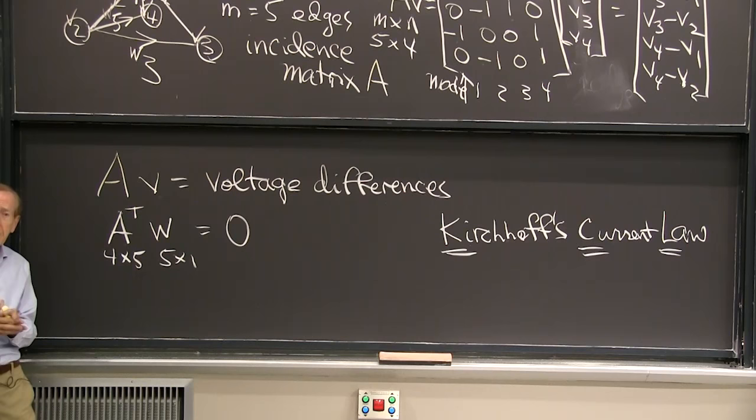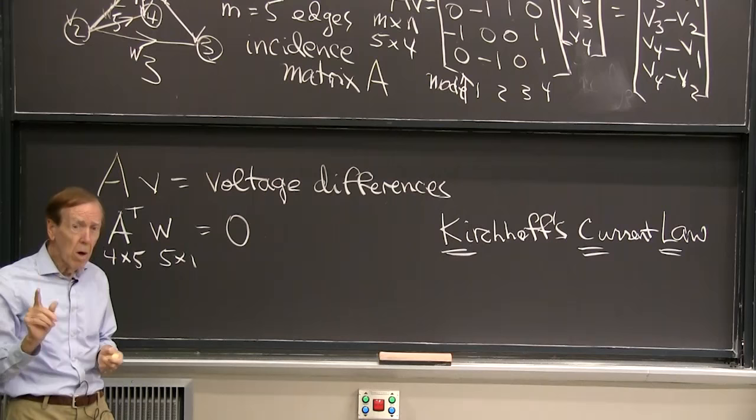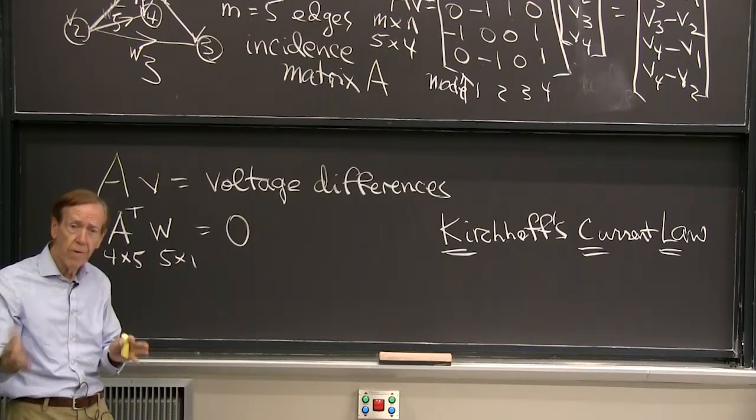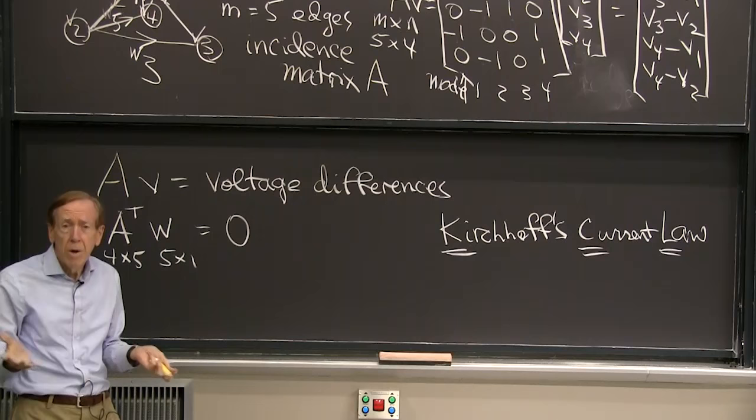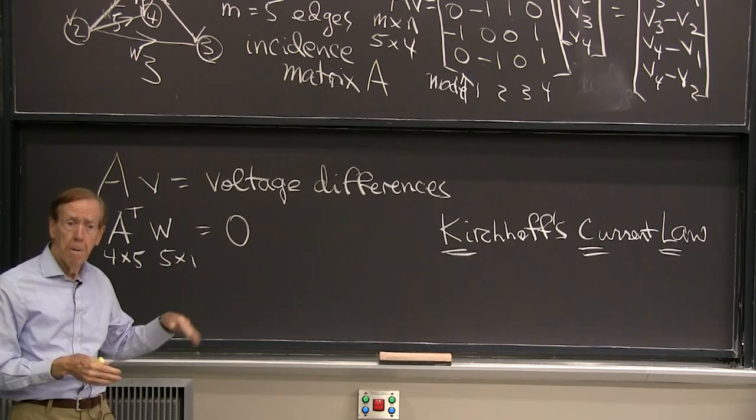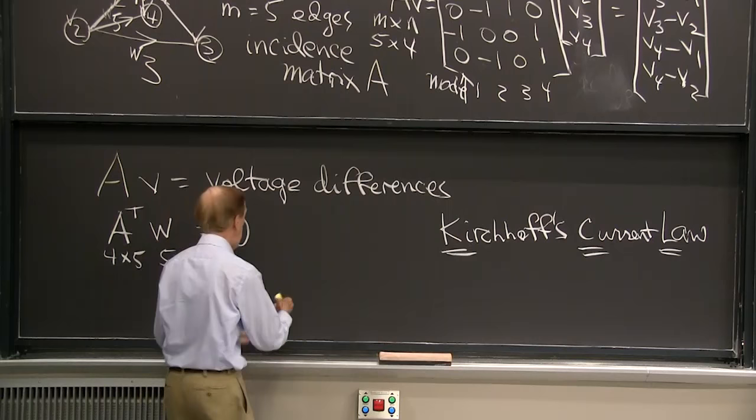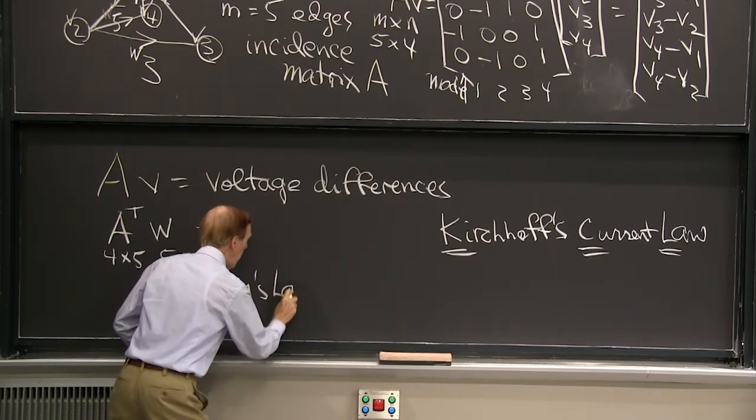So between A and A transpose, the incidence matrix is leading me to the fundamental equilibrium conditions for flow in a network. Now, one more law is needed. It has to connect voltage differences to flows, potentials to currents. Do you know who created that law for electrical, and in electrical engineering, it was Ohm. So Ohm's law, finally, Ohm's law is edge by edge